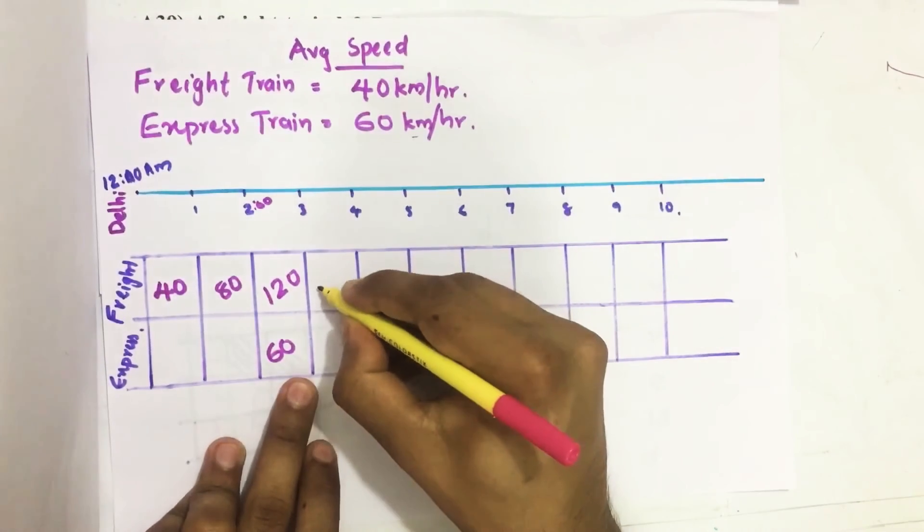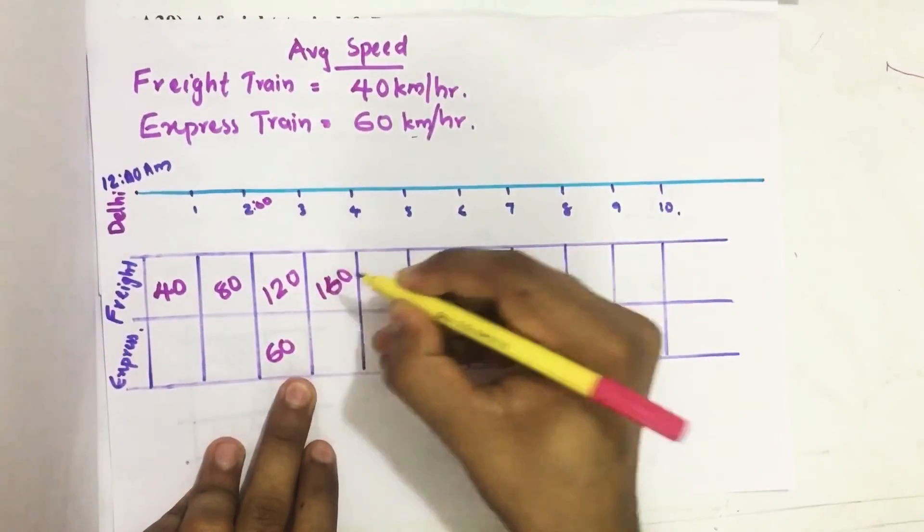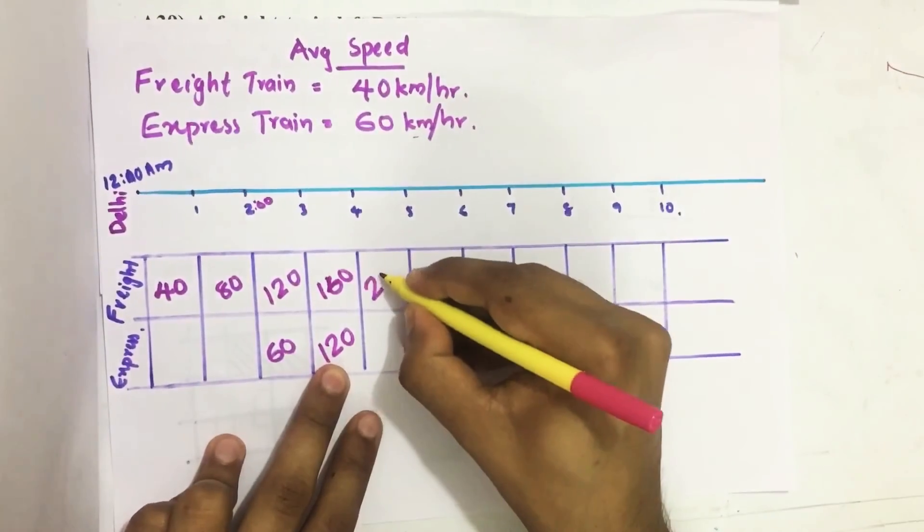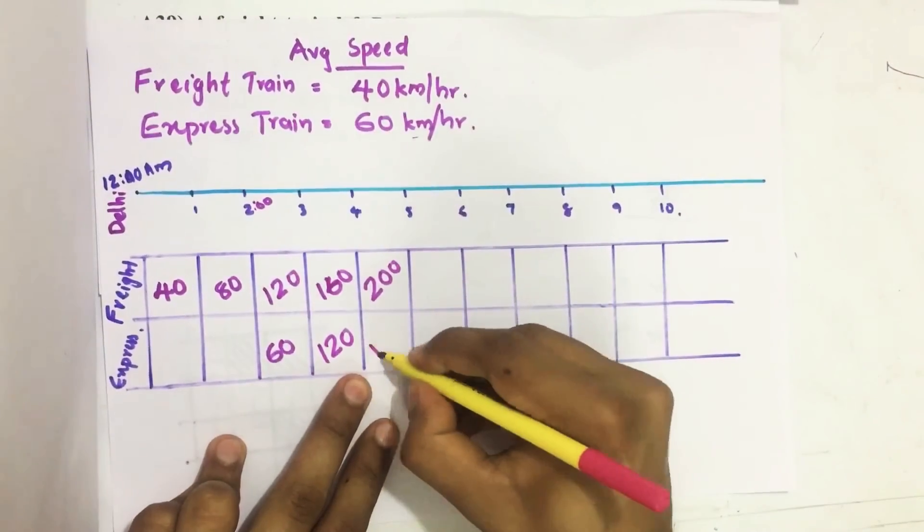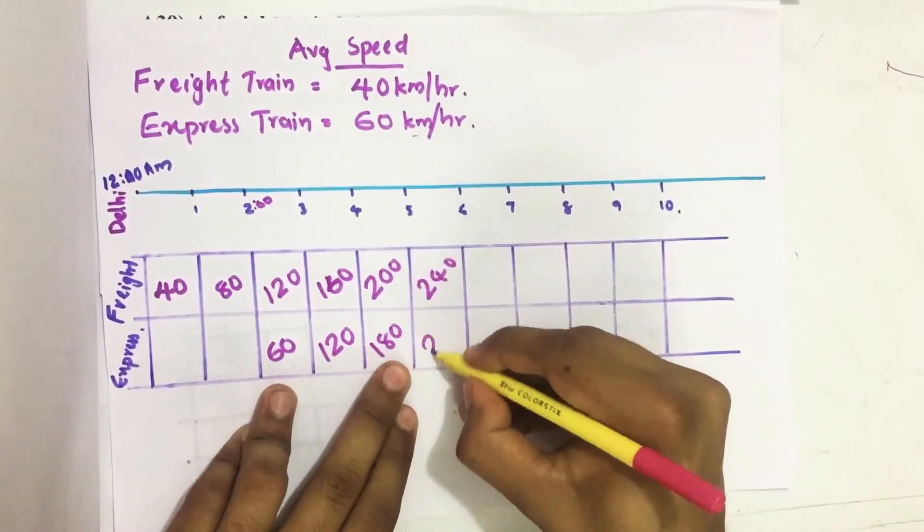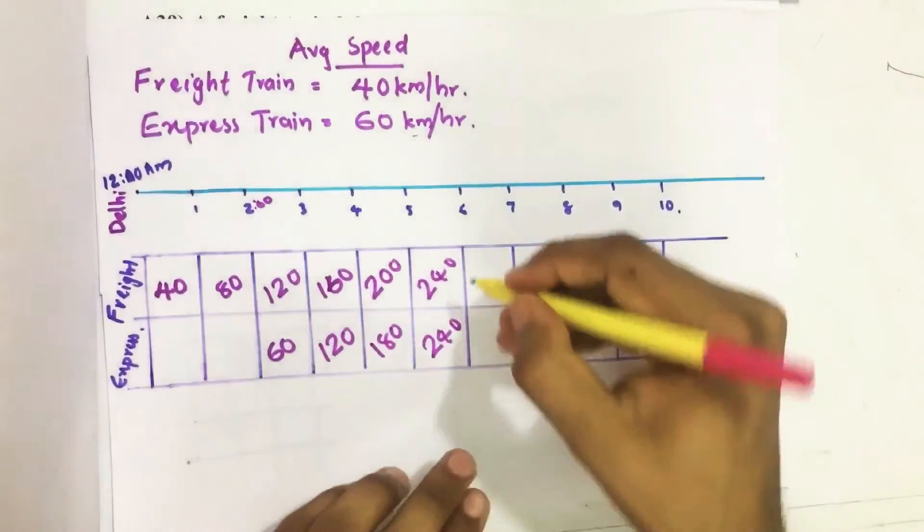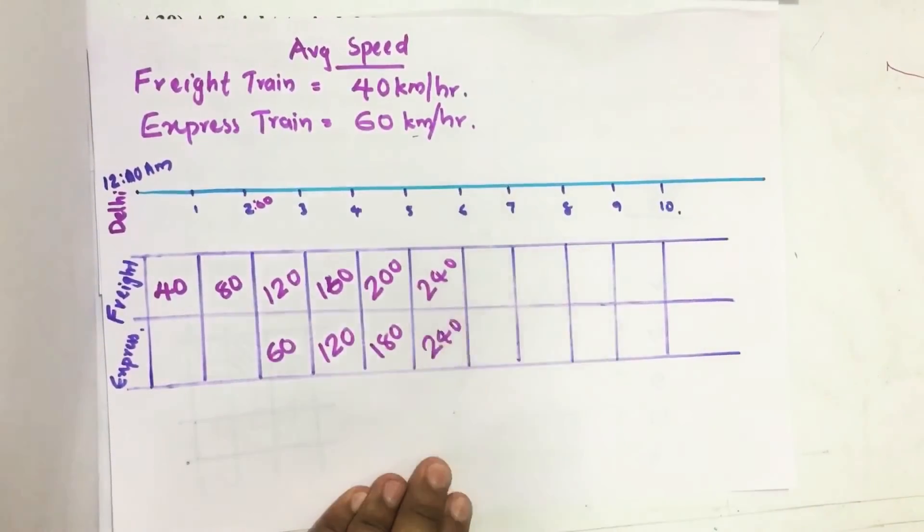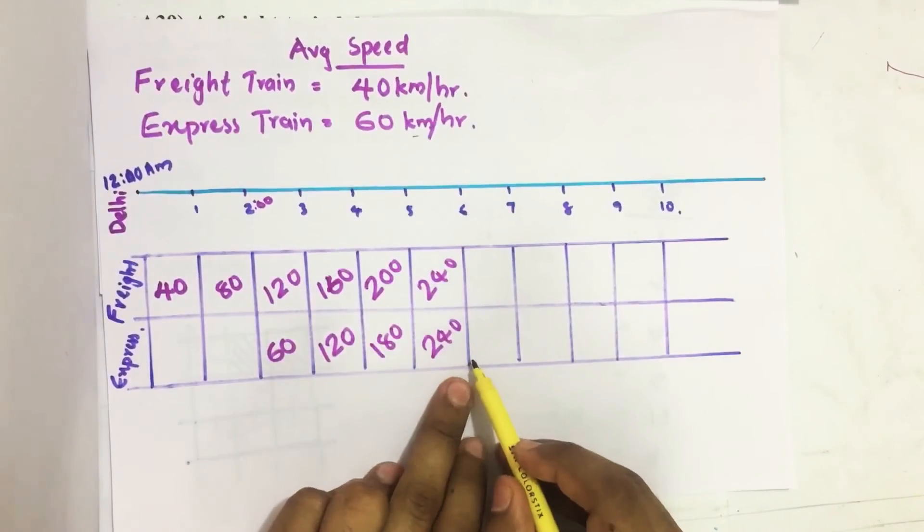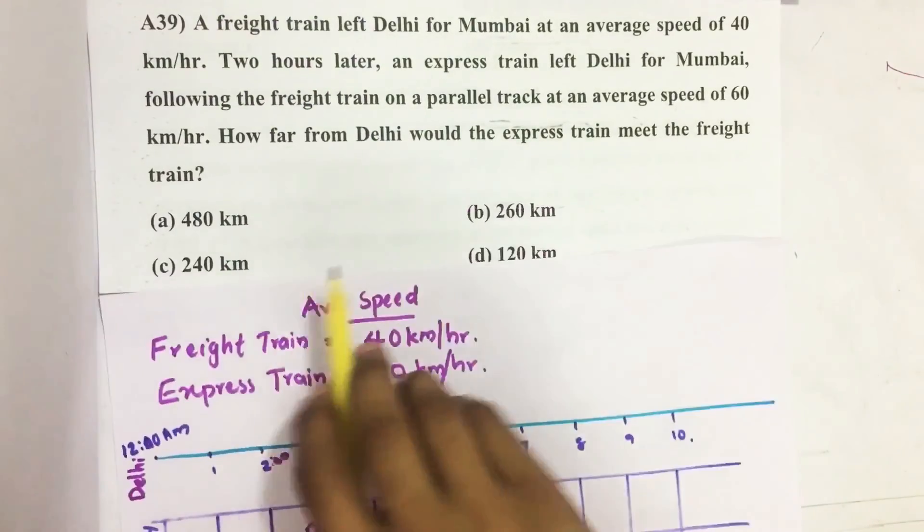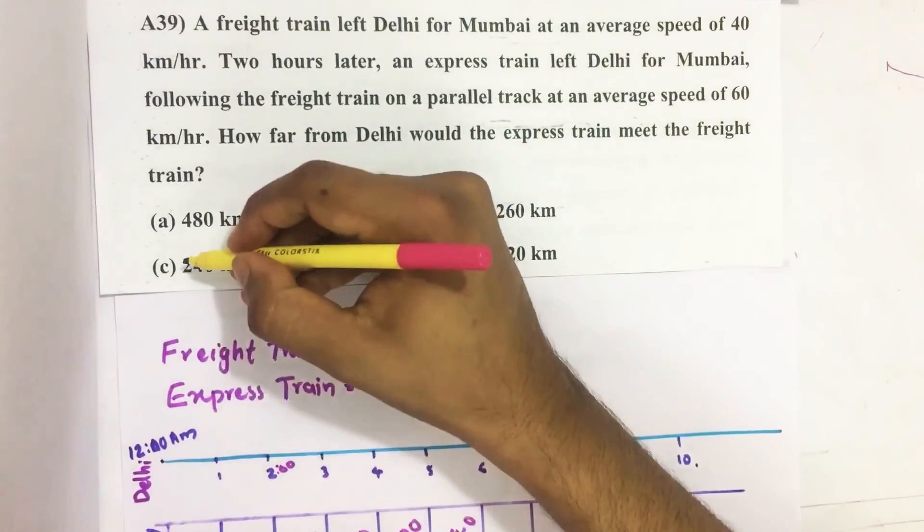Then after one hour: 160 here, 60 more km makes 120, then 200 here and 180, then 240 here and also 240 there. That means after traveling 240 km, both the freight train and express train will meet each other. Our answer is option C, 240 km.